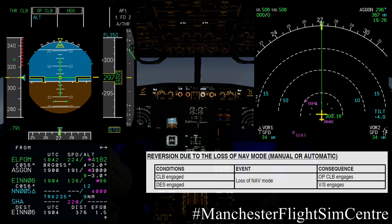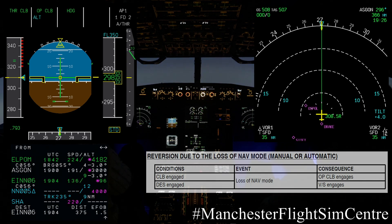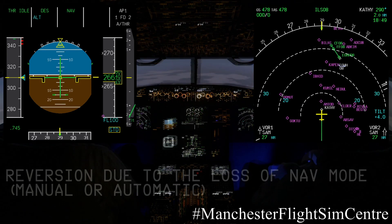This could happen, for example, if we have a runway change or a SID change leaving our departure airport, and we could end up with a lateral discontinuity that doesn't match our flight plan.